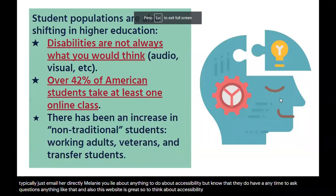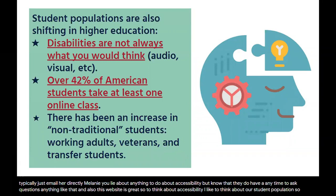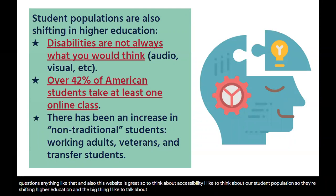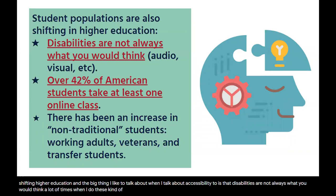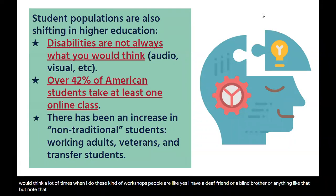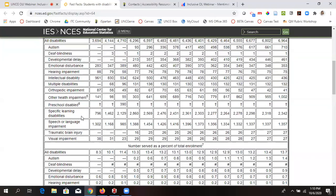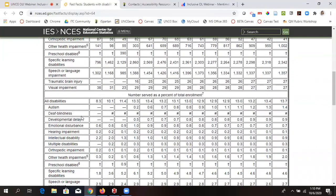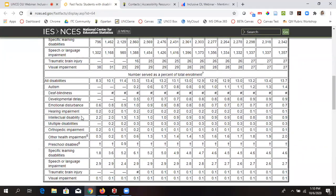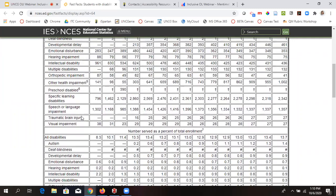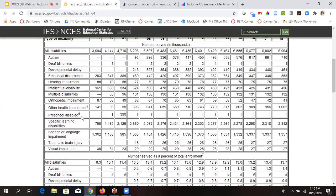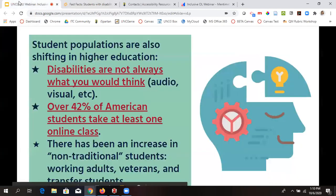When thinking about accessibility, I like to think about our student population, which is shifting in higher education. Disabilities are not always what you might think — a lot of times people immediately think of a deaf friend or a blind brother. But if you look at the National Center for Education Statistics, disabilities span a wide range, and a lot of them are cognitive and don't necessarily affect you in terms of physical abilities. Thinking through all of these things is going to be very important.